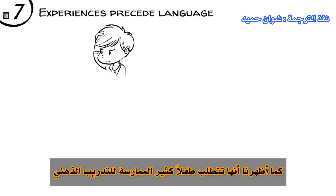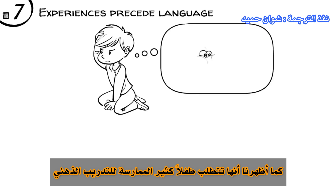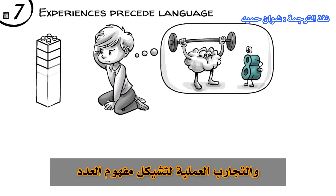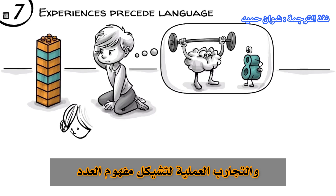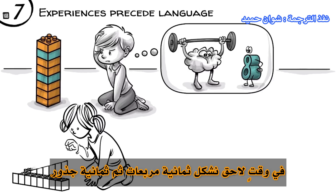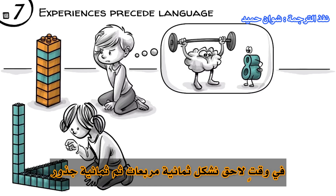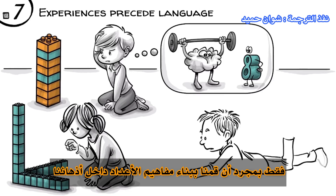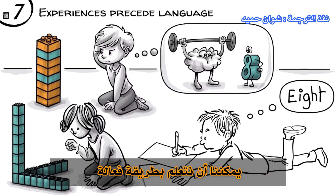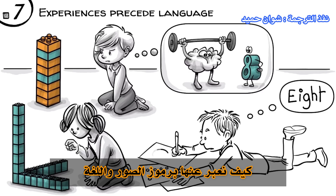Experience precedes language. As we demonstrated, it takes a child a lot of mental training and hands-on experiences to form the concept of a number. At the age of 5, we can build a simple row of 8, later form 8 as a square, then 8 as a root. Only once we have constructed number concepts inside our heads can we effectively learn how to express them with images, symbols, and language.